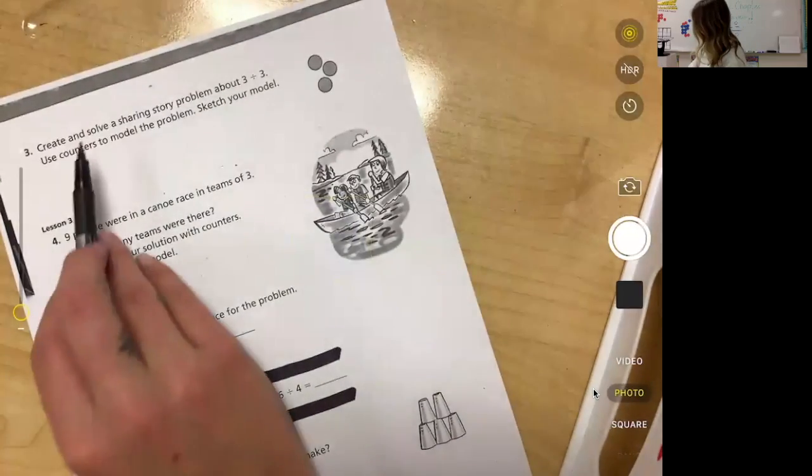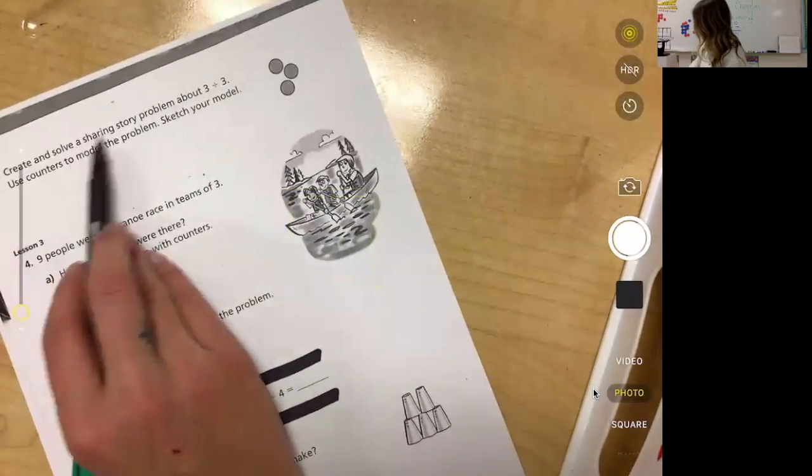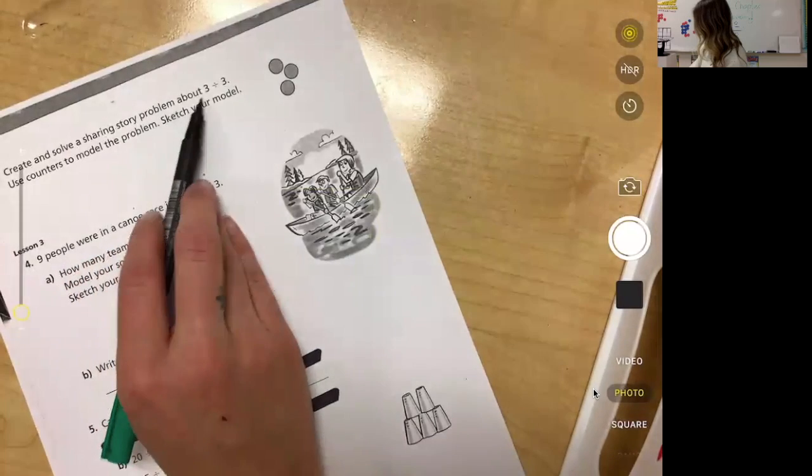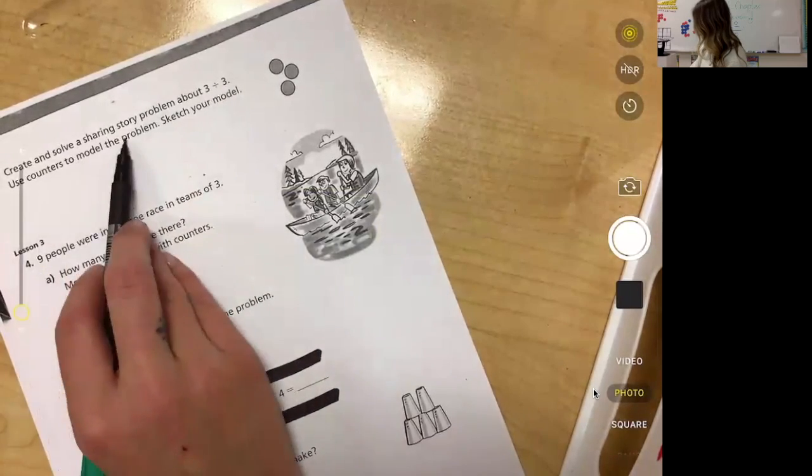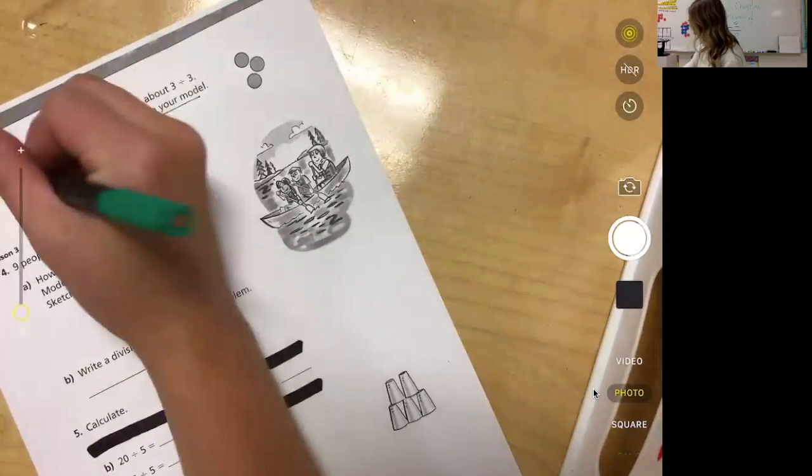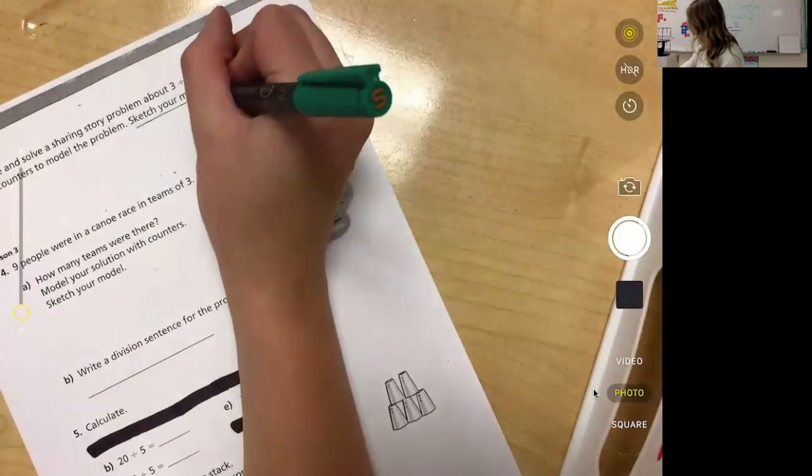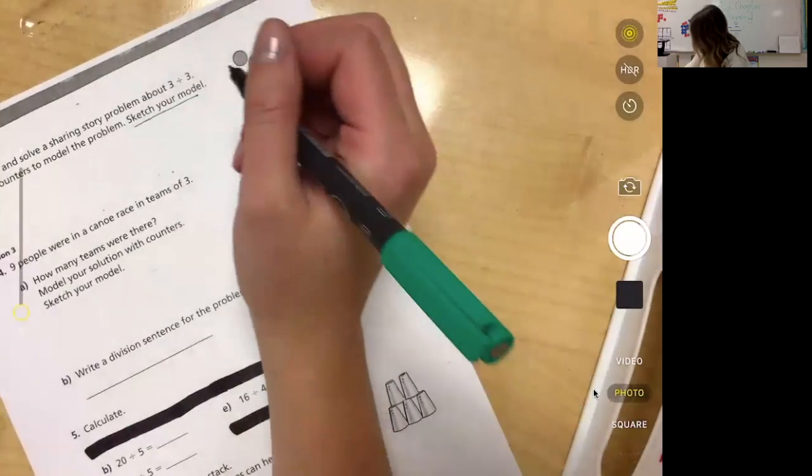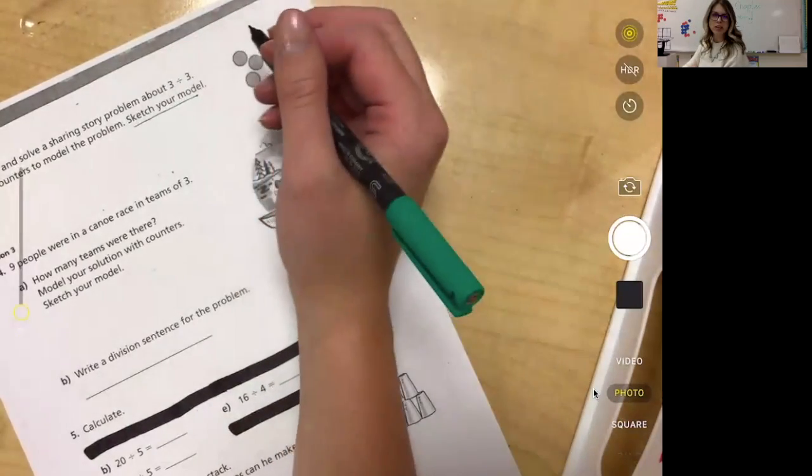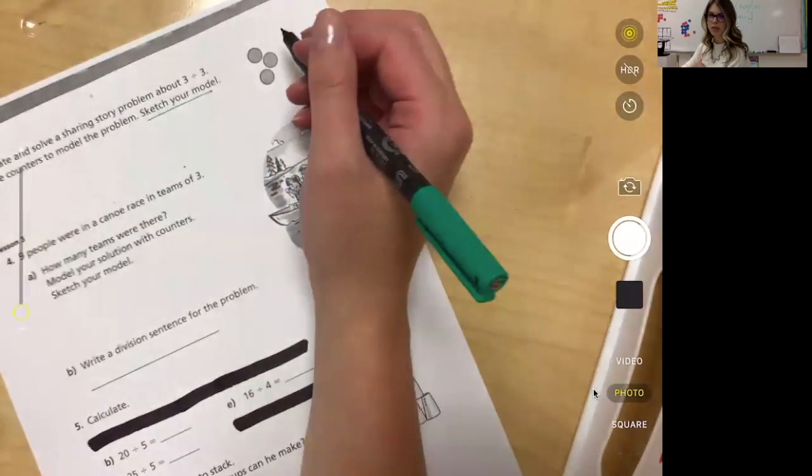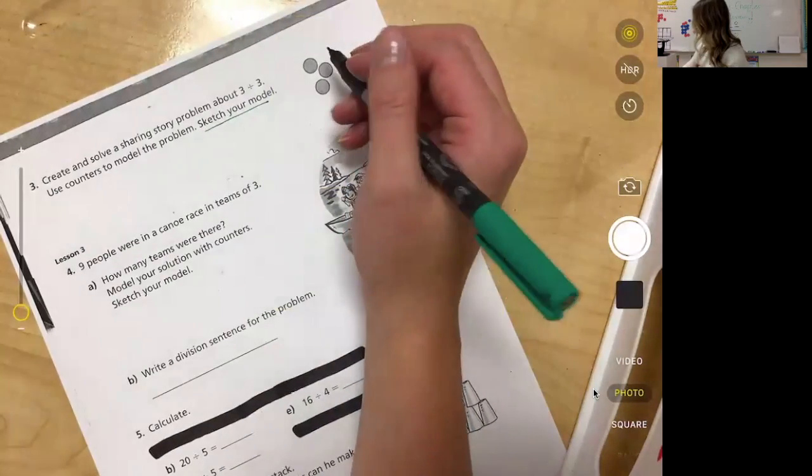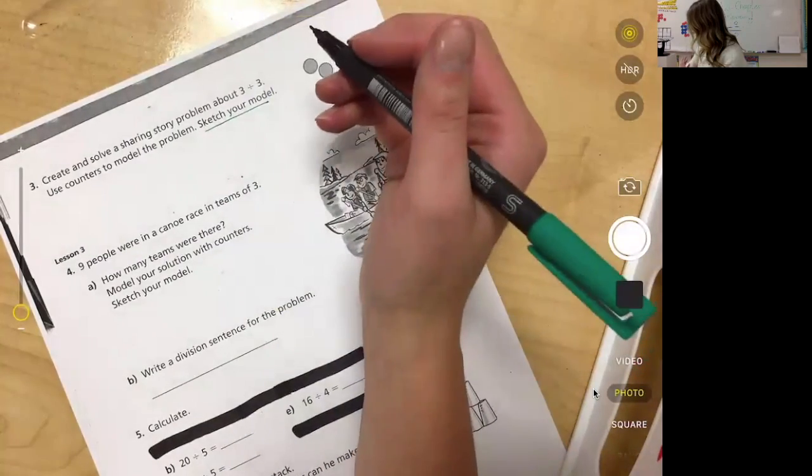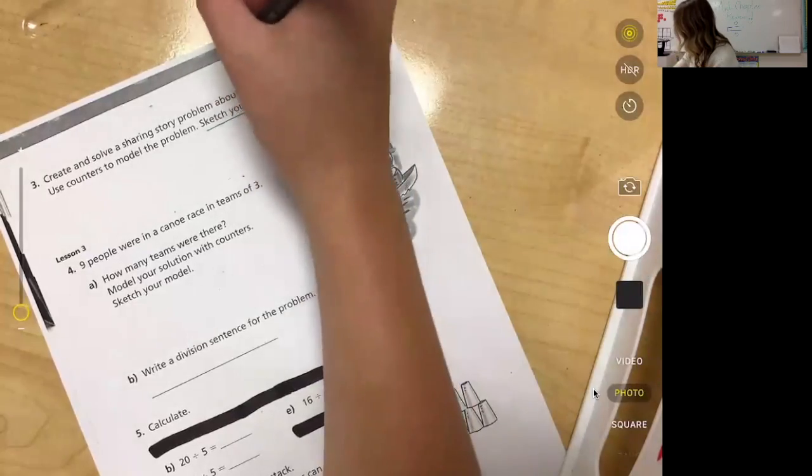This says create and solve a sharing story problem about three divided by three. Use counters to model the problem and then draw a picture. Again, if you have the counters use those, but you need to make sure you're drawing your picture. Your story problem was something that a couple students found difficult last week, which is totally fine because they are a little tricky to make up. Even I have trouble sometimes. You need to remember what a division sentence, what a division problem is made out of.